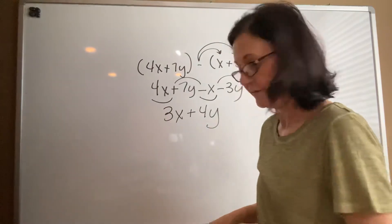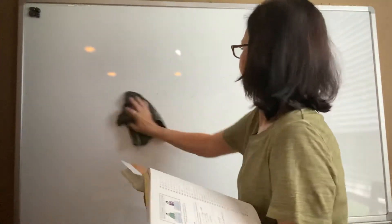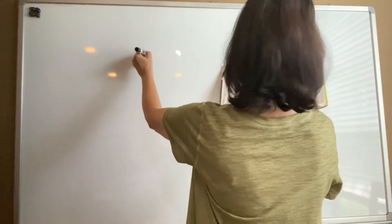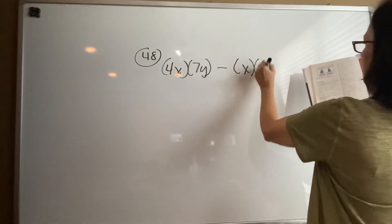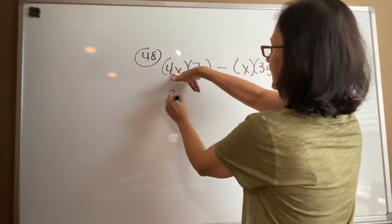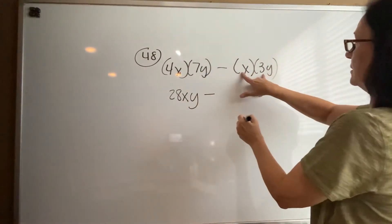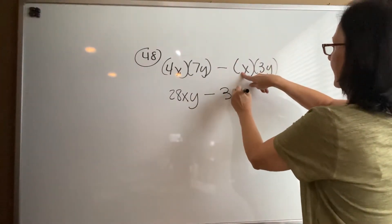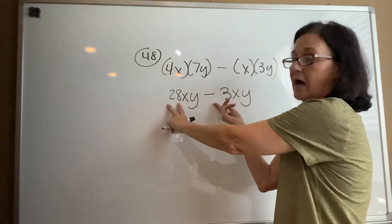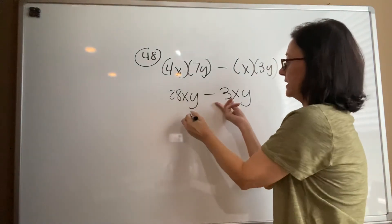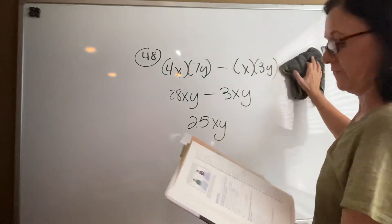Let's do number 48: (4x)(7y) minus (x)(3y). Multiply the constants: 4 times 7 is 28, giving 28xy. Then subtract 1 times 3, which is 3xy. Both terms have xy, so they are like terms. Subtract the coefficients: 28 minus 3 equals 25xy.